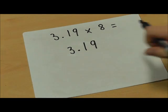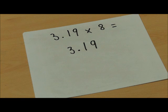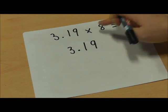So I've written 3.19 here. The trick to making sure you can use this method effectively is thinking about what this 8 is worth.